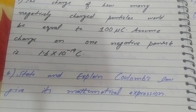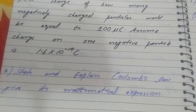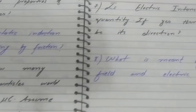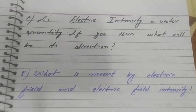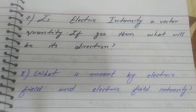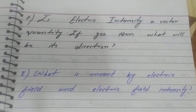Question six is: state and explain Coulomb's law, give its mathematical expression. It's both short and long. Then question seven is: is electric field intensity a vector quantity? If yes, then what will be its direction? Then question eight is: what is meant by electric field and electric field intensity? So those are the short questions.